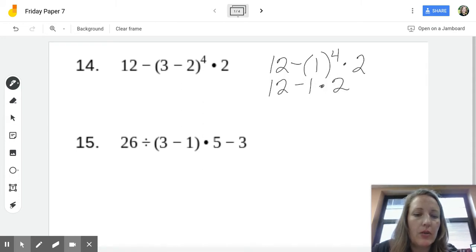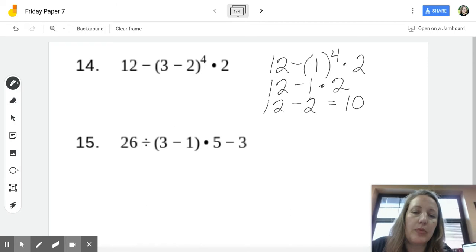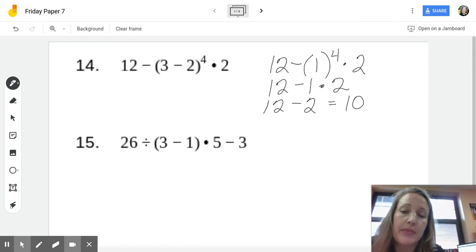I am not going to say 12 minus 1 is 11 times 2 is 22. That would be my favorite wrong answer. Instead, we have to multiply before we subtract. So, 12 minus, what is 1 times 2? 2. So, it is 12 minus 2, and my answer is 10. This is the work I like to see on your paper when it says show your work.